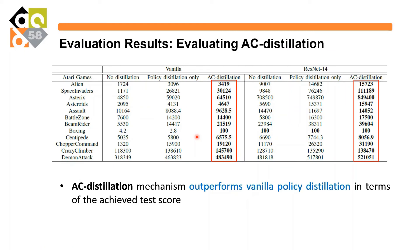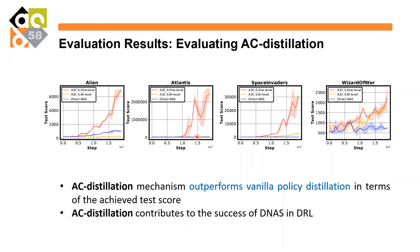We evaluate the AC distillation strategy we proposed. Generally, implementations with distillation and our AC distillation strategy outperform vanilla policy distillation. We also show task scores during the training search steps, and our AC distillation achieves a quicker, steeper rise in task scores during the search steps. This means it provides a better estimate of the search process and leads to more effective DNAS in deep RL.